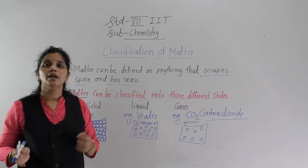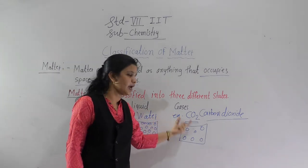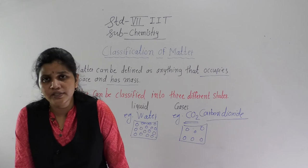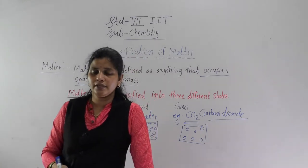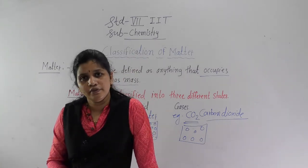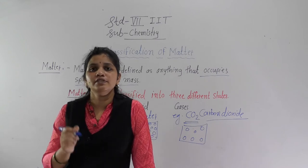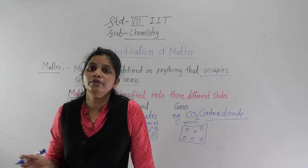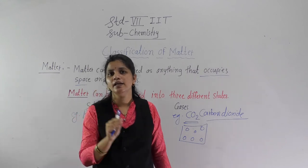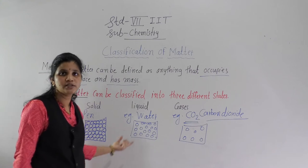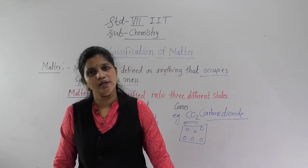All substances are classified into three different states: solid, liquid, and gaseous. There are differences related to molecular arrangement, shape, and size. Write these differences in your chemistry notebook. Also, classify the substances near you into three groups — solid, liquid, and gaseous — and write at least 10 examples of each.